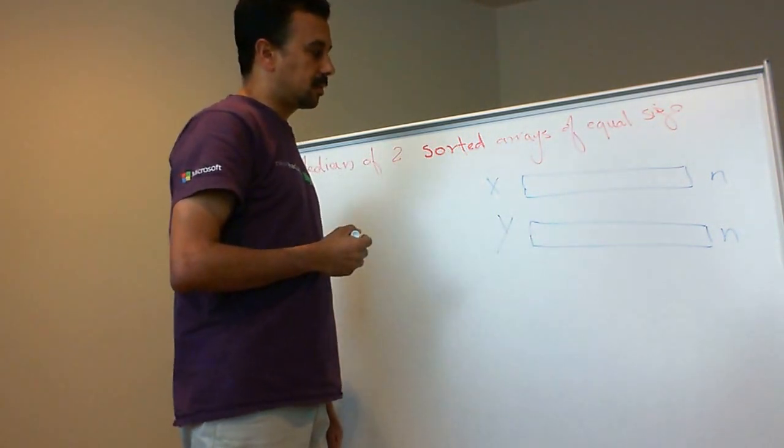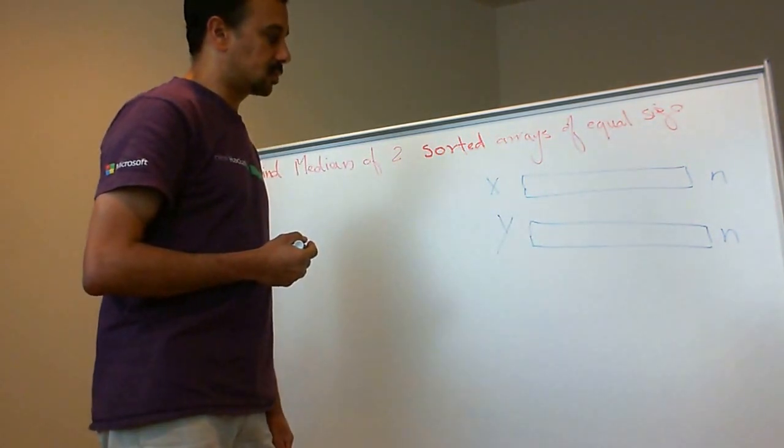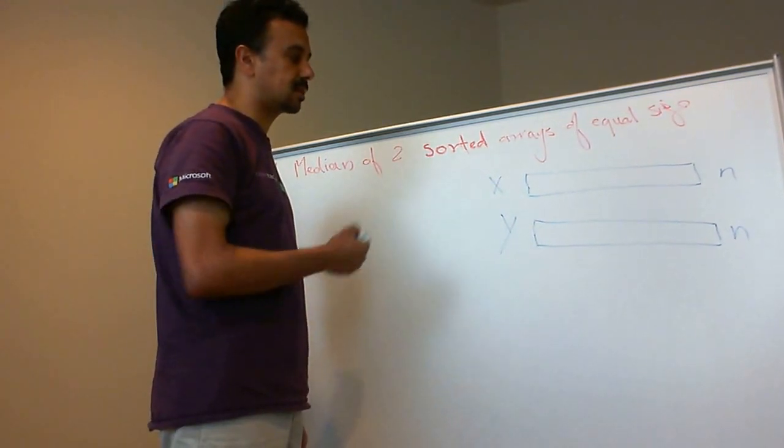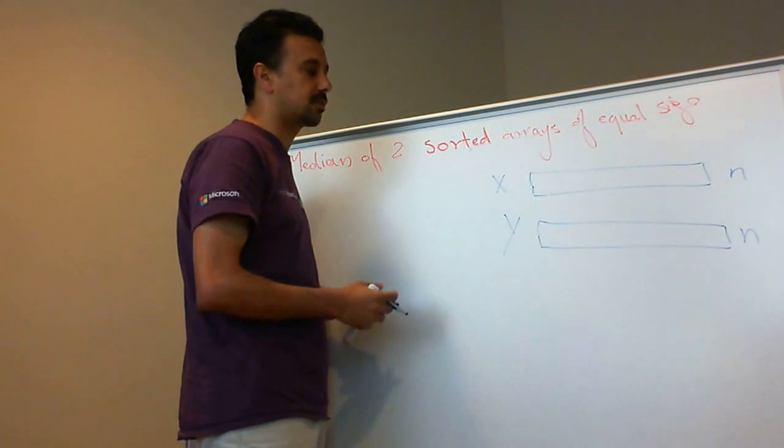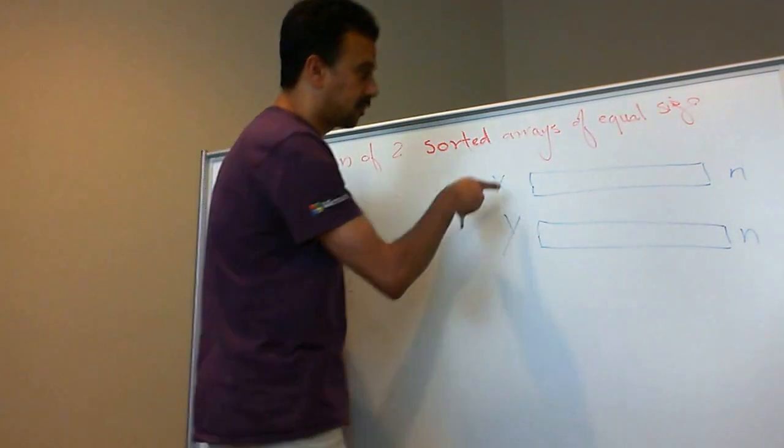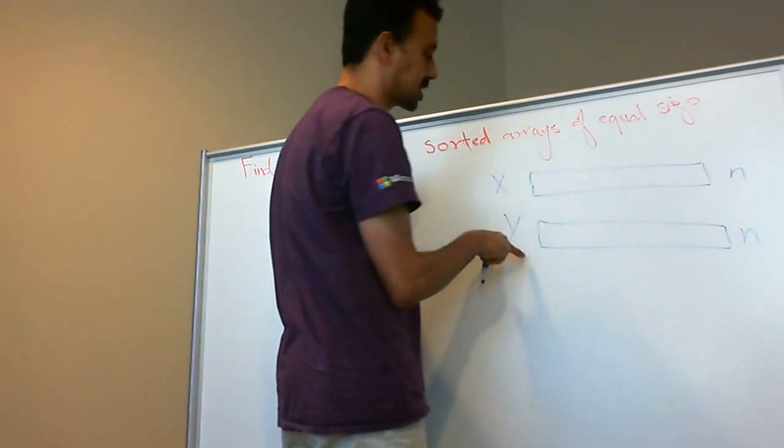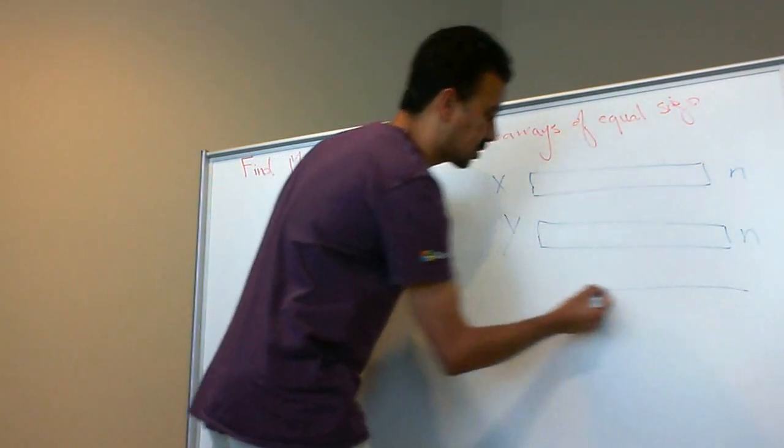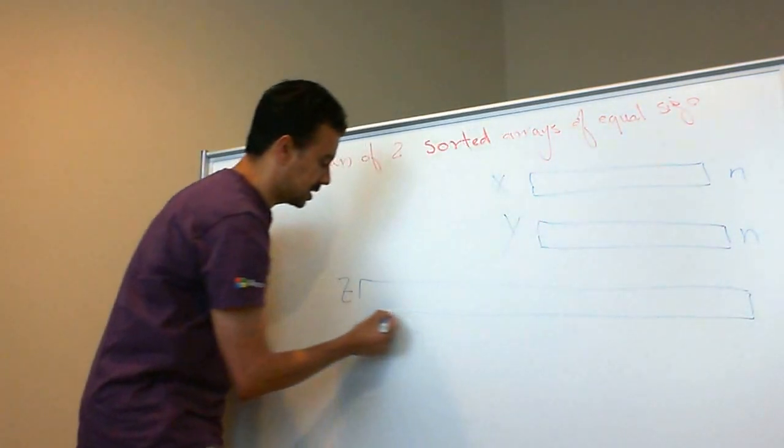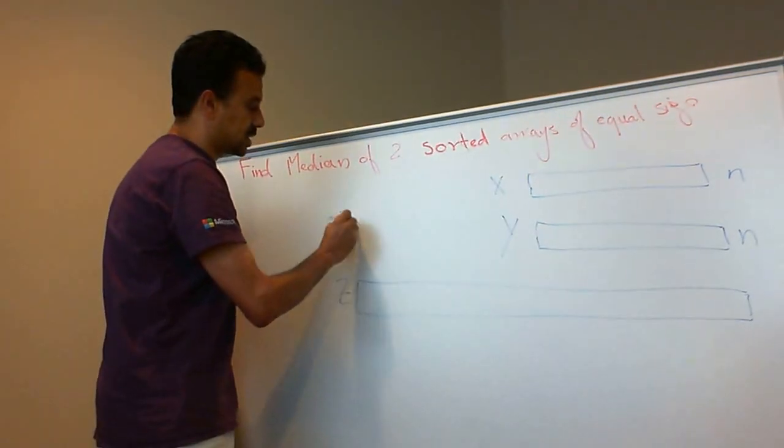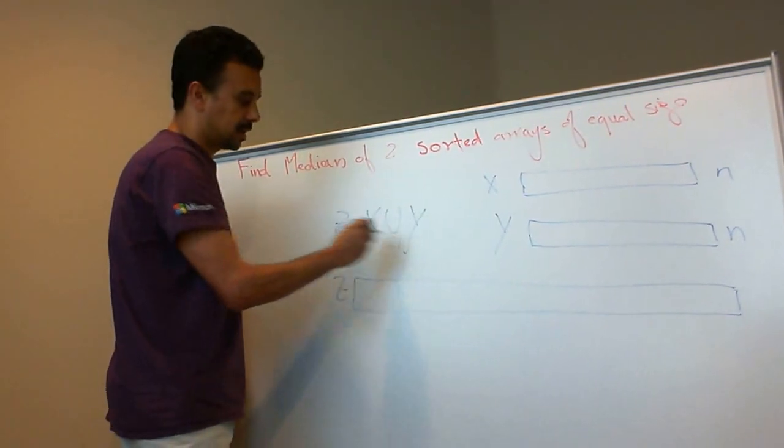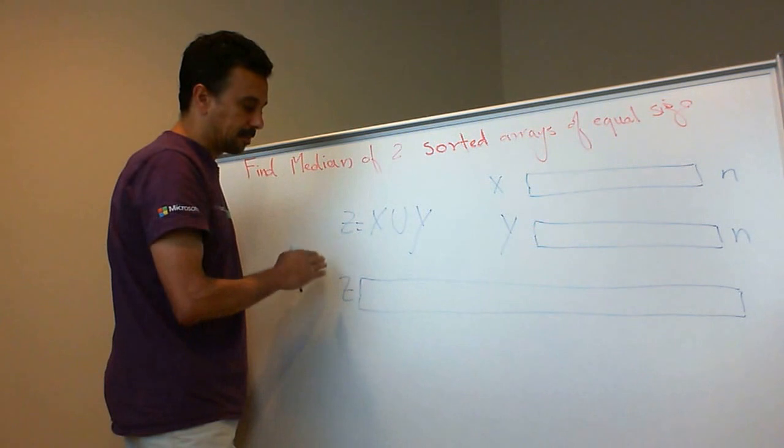What we need to solve for is finding the median had these arrays been merged together into array z of 2n, combining both x and y. Let's assume this array z, which equals the union of x and y, is sorted.